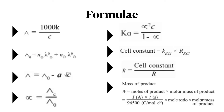Where lambda is the molar conductivity, k is the conductivity, and c is the concentration. The second formula is lambda-not equal to n-plus times lambda-not-plus plus n-minus times lambda-not-minus, where n-plus and n-minus are the number of cations and anions respectively, and lambda-not-plus and lambda-not-minus are the molar conductivities at zero concentration of cations and anions. Lambda-not is the molar conductivity at zero concentration or at infinite dilution.